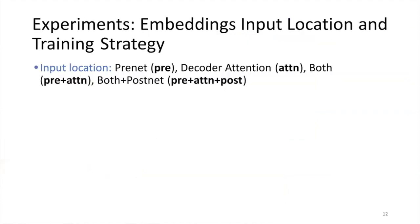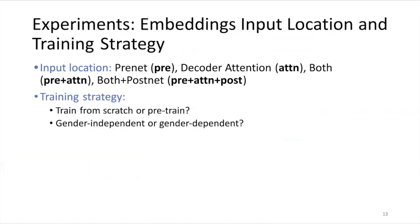We ran some preliminary experiments to answer questions about the best input location and the best training strategy. For input location, we tried: input to the pre-net, input to the attention, both pre-net and attention, and all three of pre-net, attention, and post-net. For training strategy, we wanted to see whether we should train from scratch or pre-train the model, and also whether to train in a gender-independent manner using all data together, or train gender-dependent models using male and female data separately.